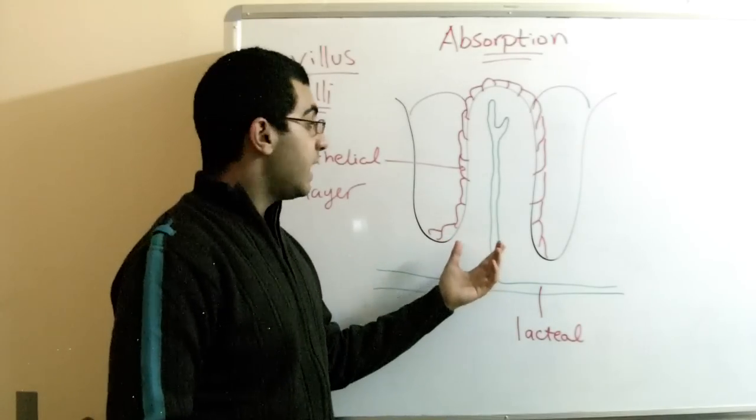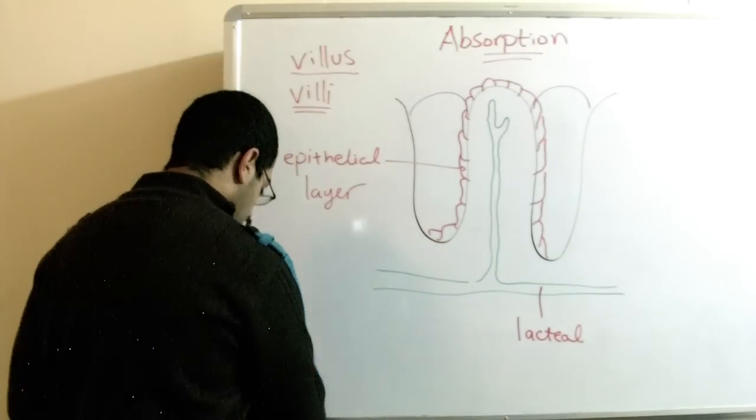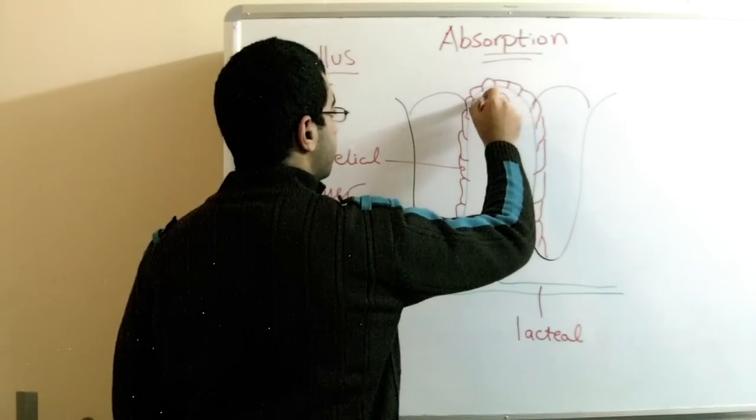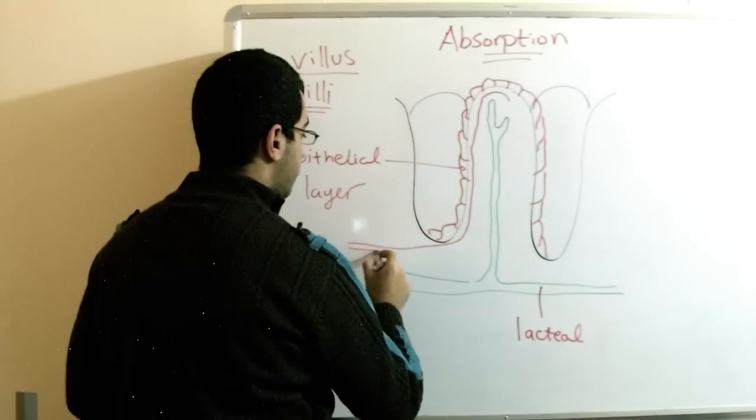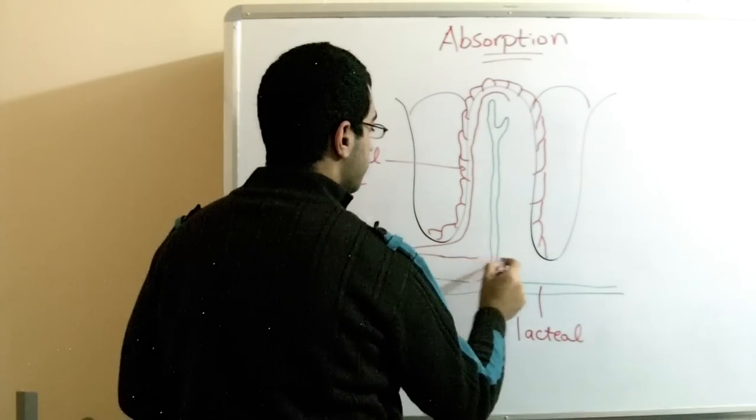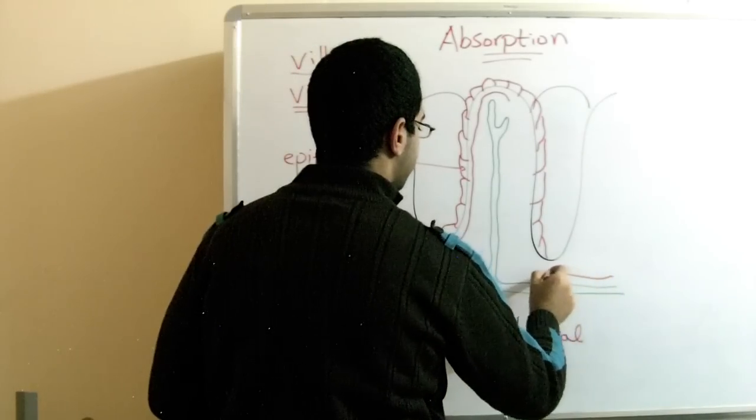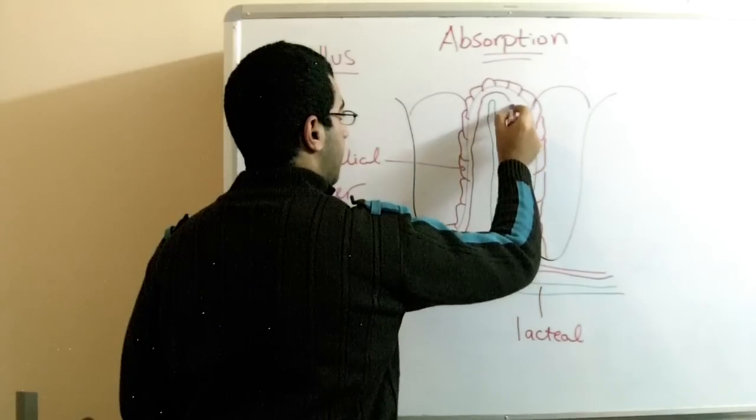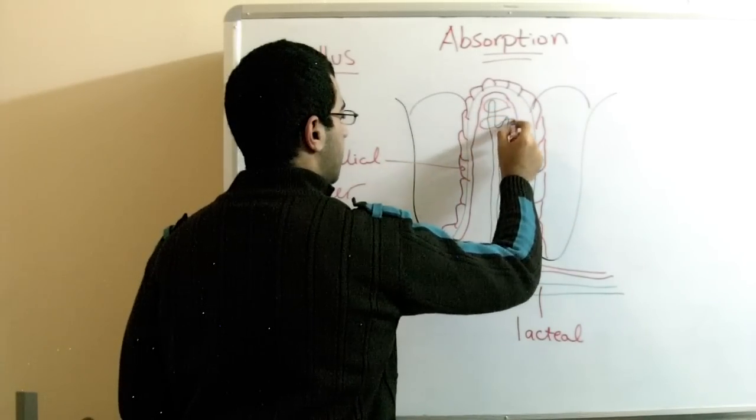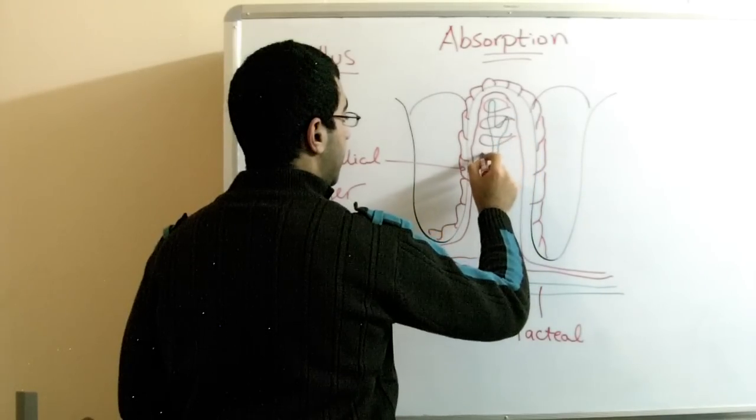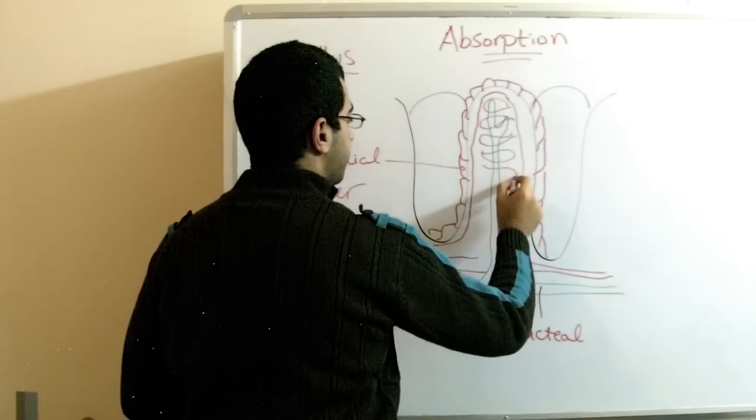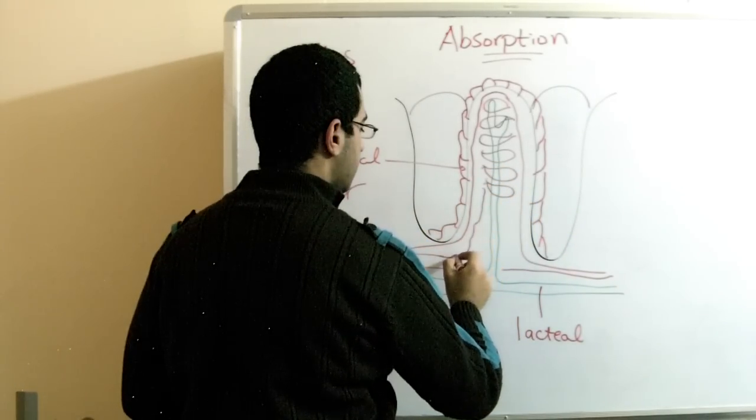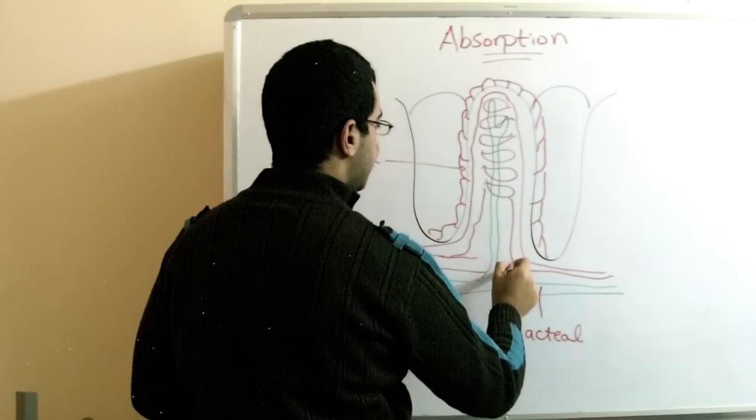So the blood vessels - here there are blood vessels also which surround the lacteal like this. We have arteries and veins also, this way, which are surrounded completely and they are intermingling here because they are joined together for the blood exchange.